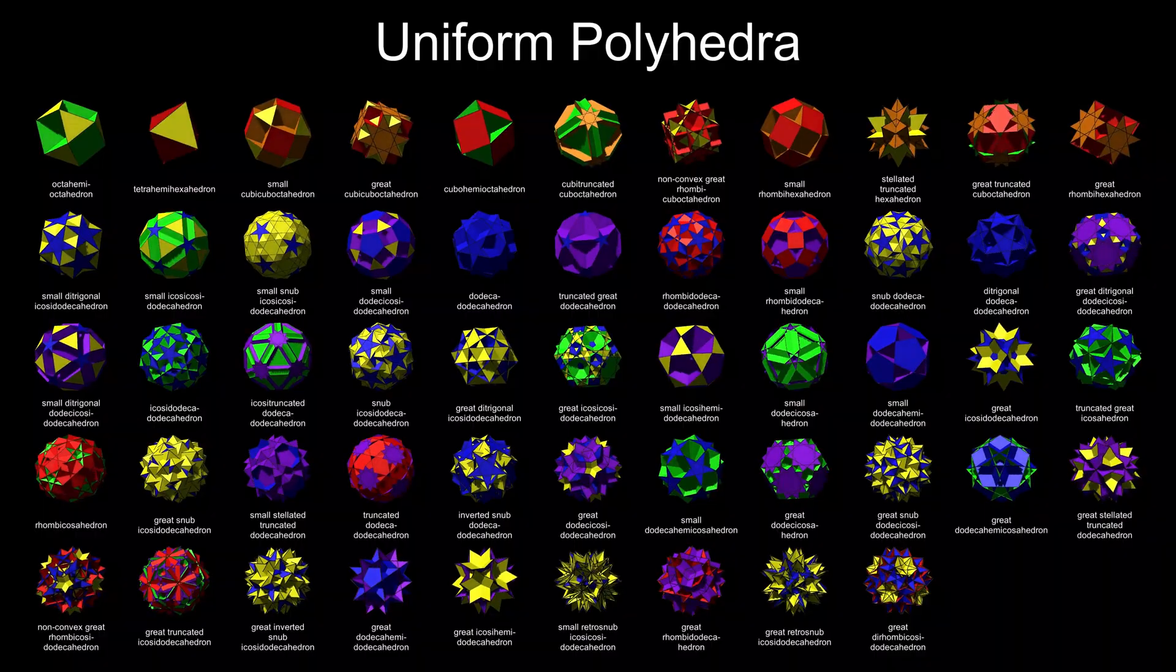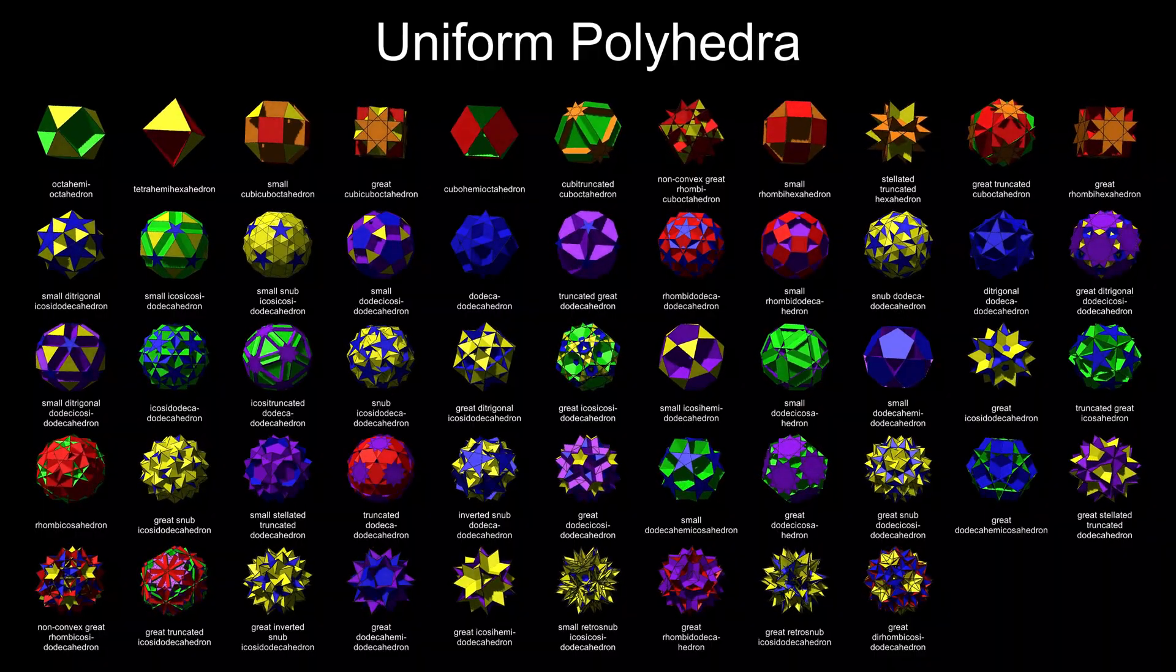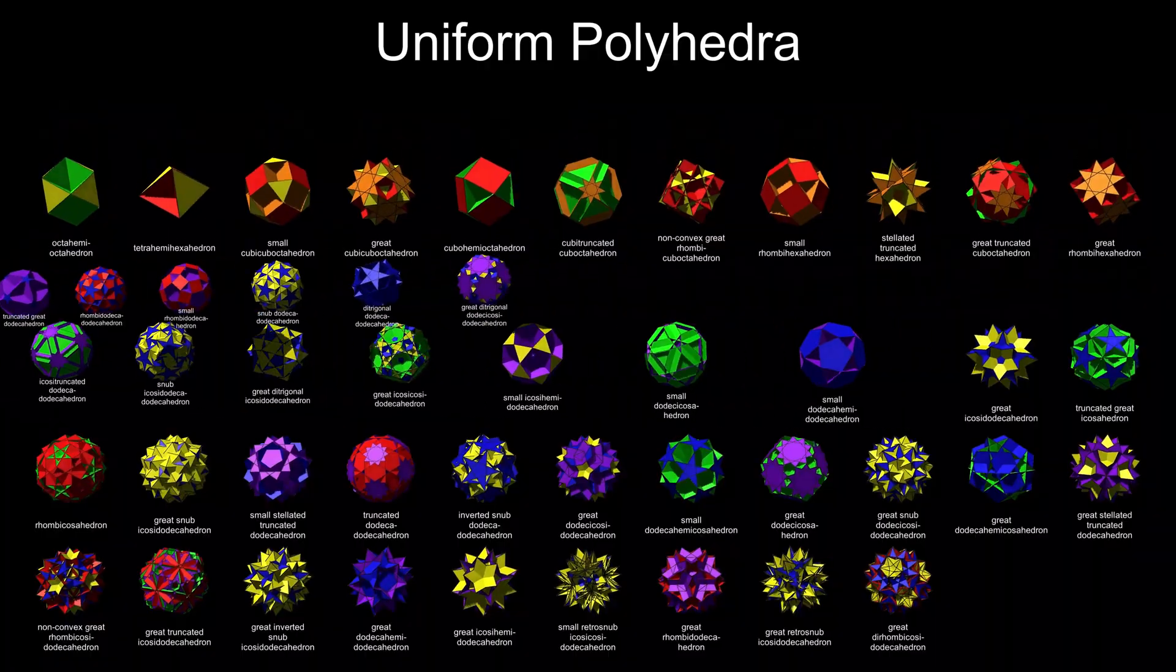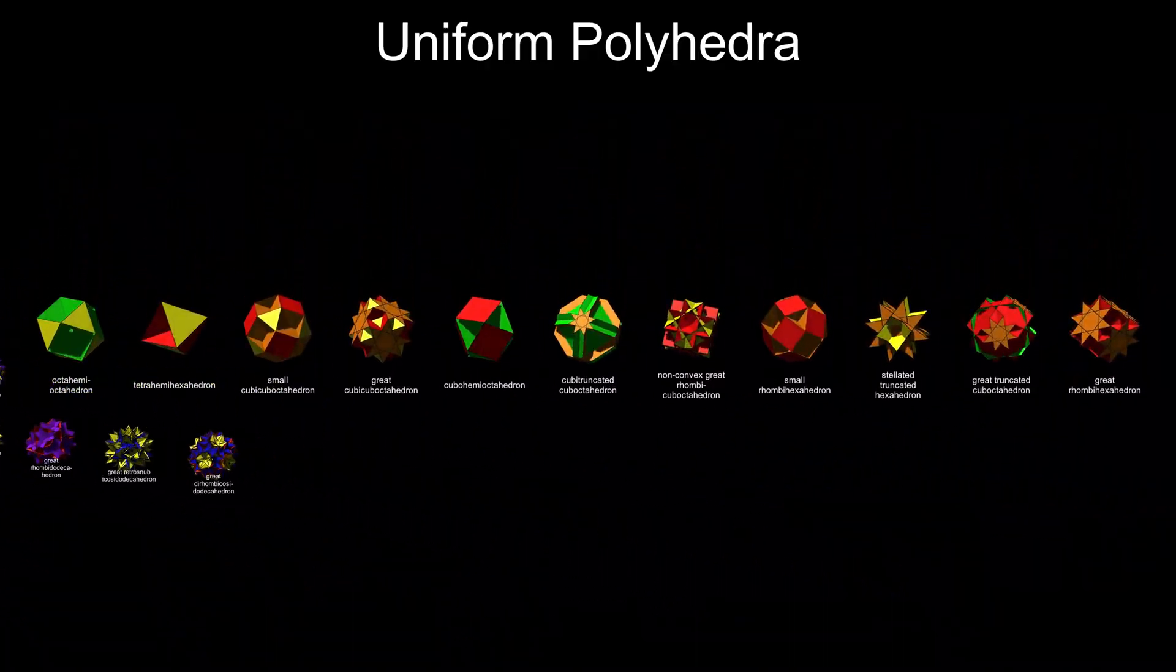But this still leaves 53 polyhedra, the non-convex equivalents of the Archimedean solids, to be discussed. We'll start with the 11 polyhedra with tetrahedral or octahedral symmetry.